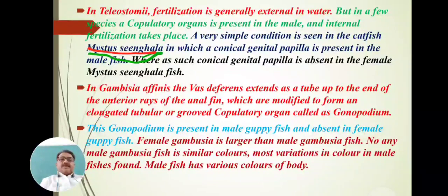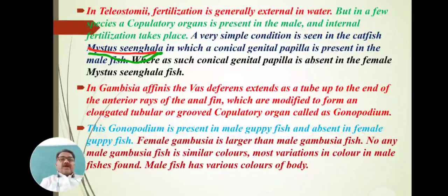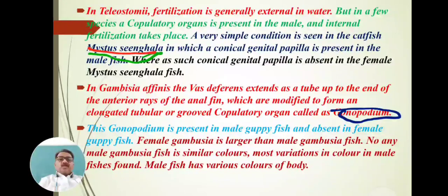In the next fish, Gambusia affinis, the first difference extends as a tube up to the end of the anterior rays of the anal fin, which are modified to form an elongated tubular grooved copulatory organ called the gonopodium. This gonopodium is present only in male Gambusia affinis and is absent in female Gambusia affinis.